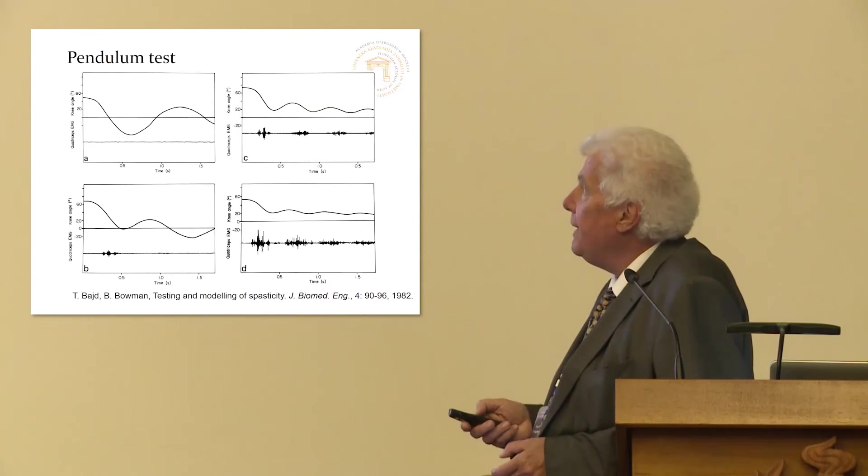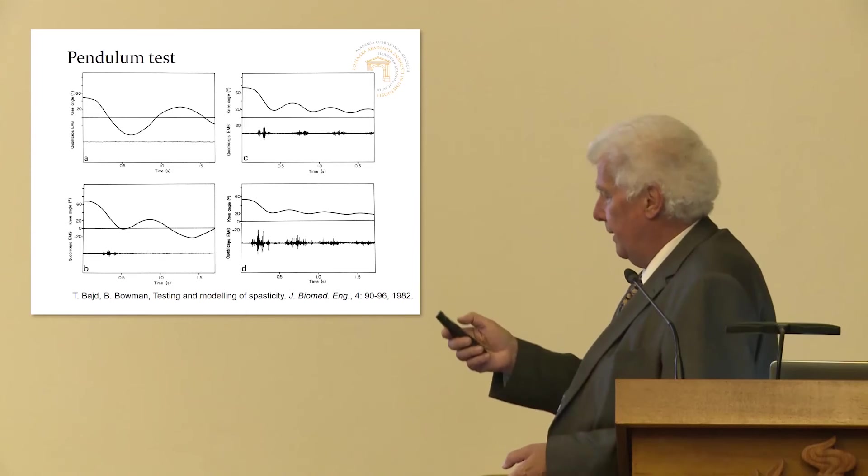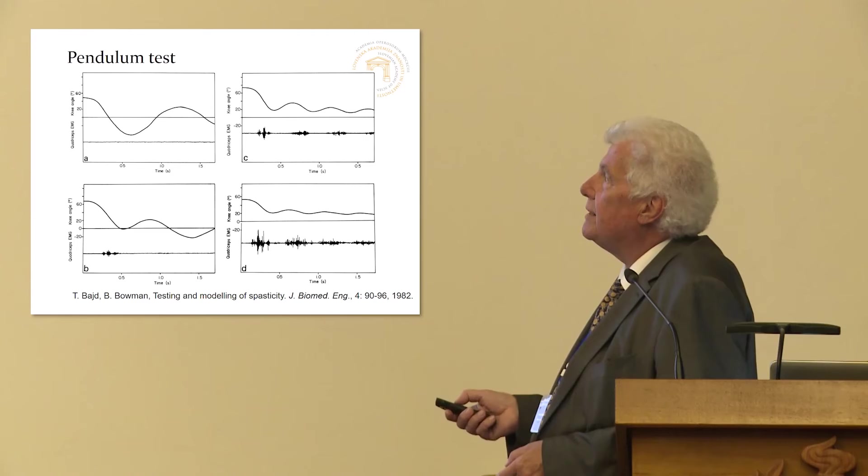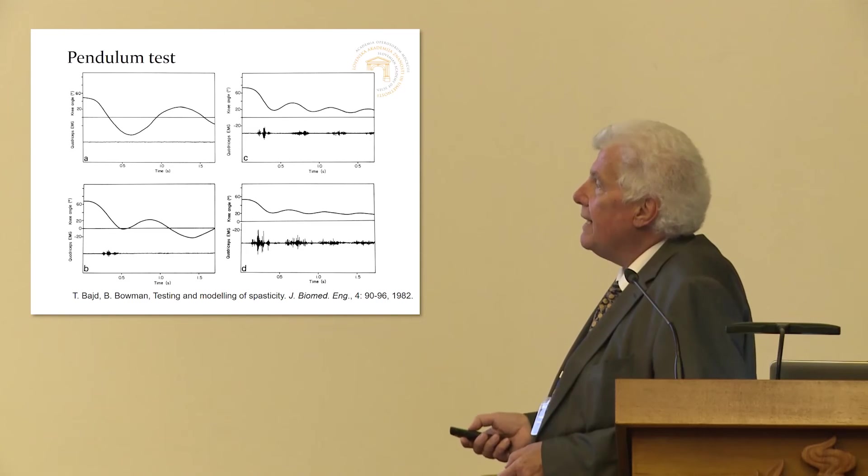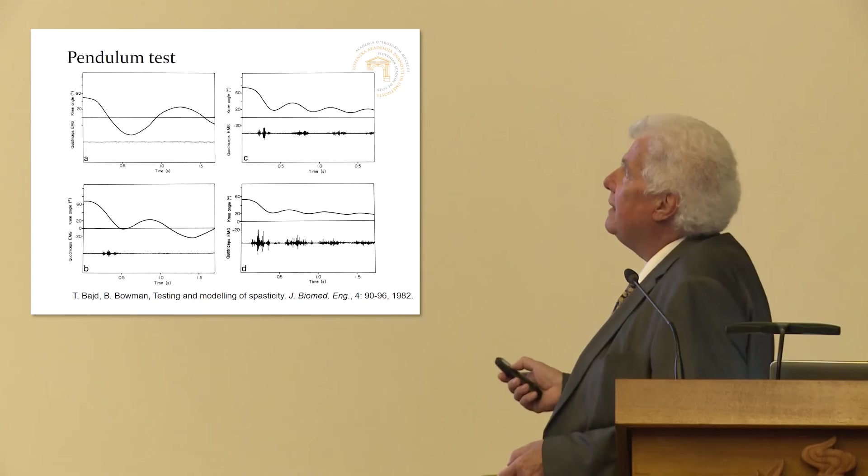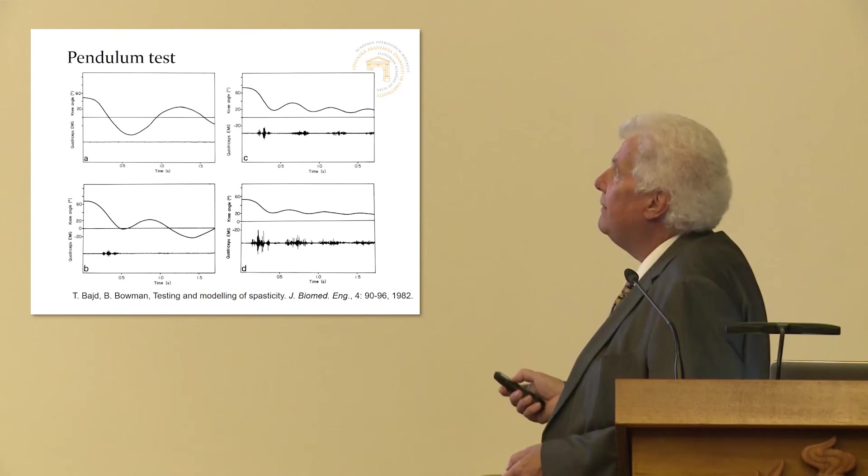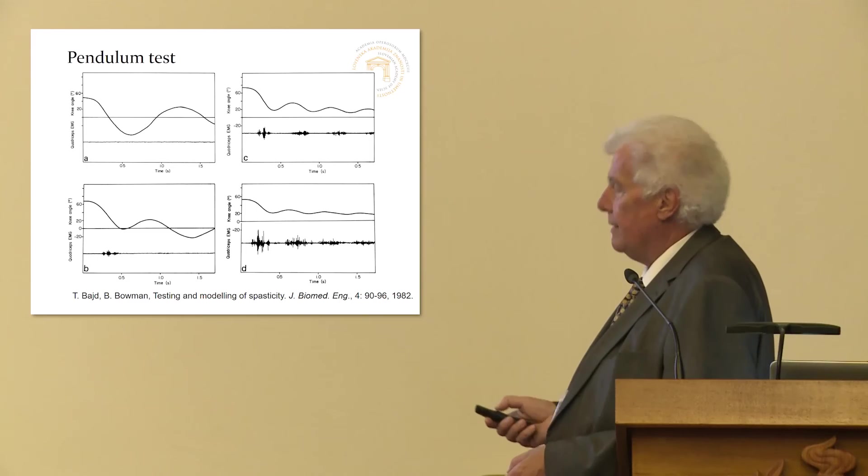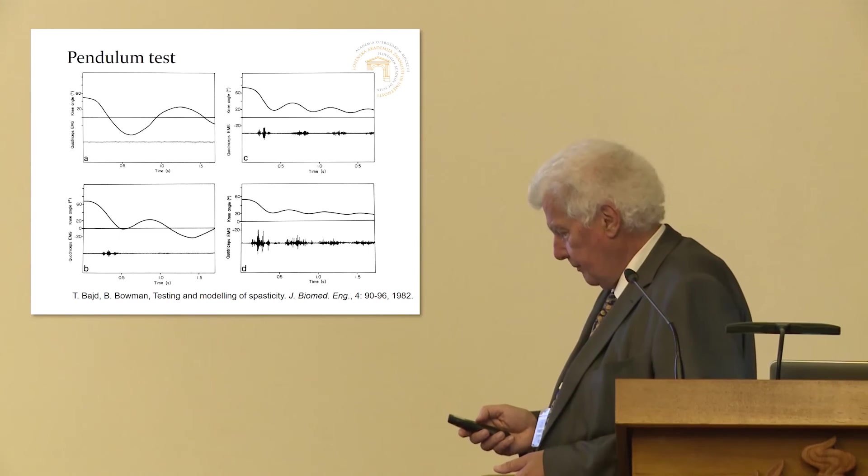So what is happening is that, for example, in the case of a healthy person, the leg is just swinging around the neutral position. There is no EMG. When we have a slight spasticity, this spasticity stops the swinging already during the first swing and there is an EMG present. More spasticity, moderate spasticity, the leg is slowly coming to the neutral position. There is EMG at each negative slope. And even with severe spasticity, the leg is almost not swinging and EMG is present through all the trace.